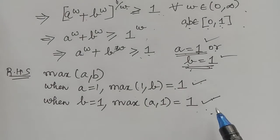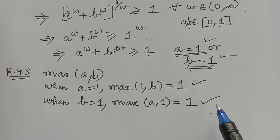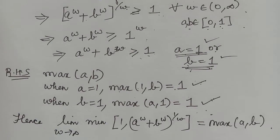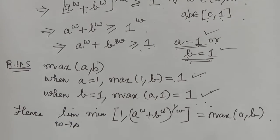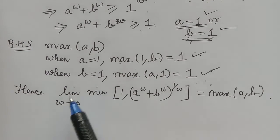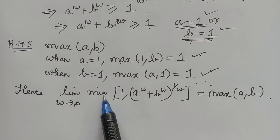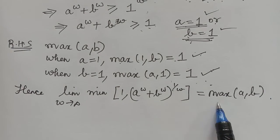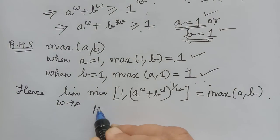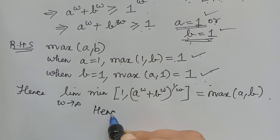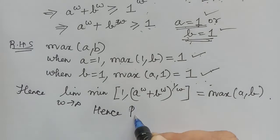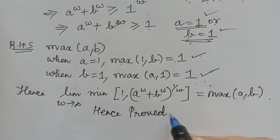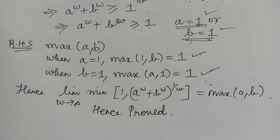Hope you have understood the proof of the theorem in all three cases. Hence we say that limit w tending to infinity of minimum of 1 and (a^w + b^w)^(1/w) equals maximum of a, b. So we have proved the theorem in all three cases. Thank you.